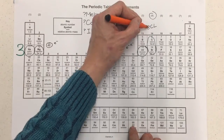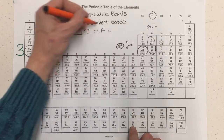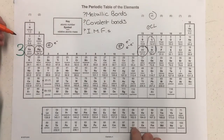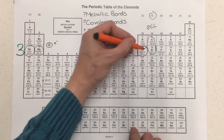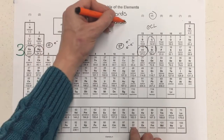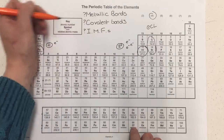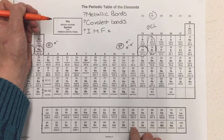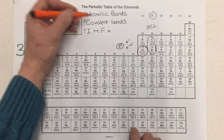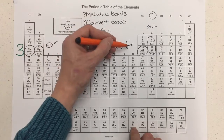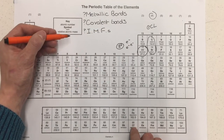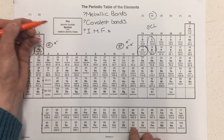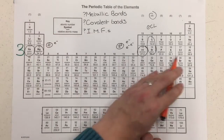The giant covalent lattice requires breaking covalent bonds to melt or boil. There are no intermolecular forces and no metallic bonds for silicon — it's breaking covalent bonds in order to melt and boil. Since a covalent bond is ordinarily stronger than a metallic bond, we expect silicon to have, and it does, the highest melting and boiling point of period 3.